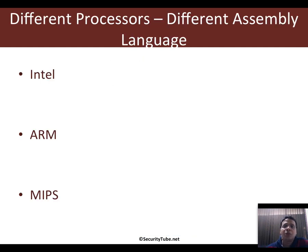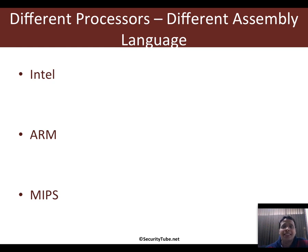Unlike high-level languages like C and Java, which are very portable, assembly language is very specific to the processor family. Sometimes even between different processors there are instructions that differ and are very processor-specific. For example, one of the latest i7 processors may have assembly language instructions that older 386 or 486 family processors may not understand. This means assembly language is not portable — Intel assembly is very different from ARM assembly, which is different from MIPS assembly.